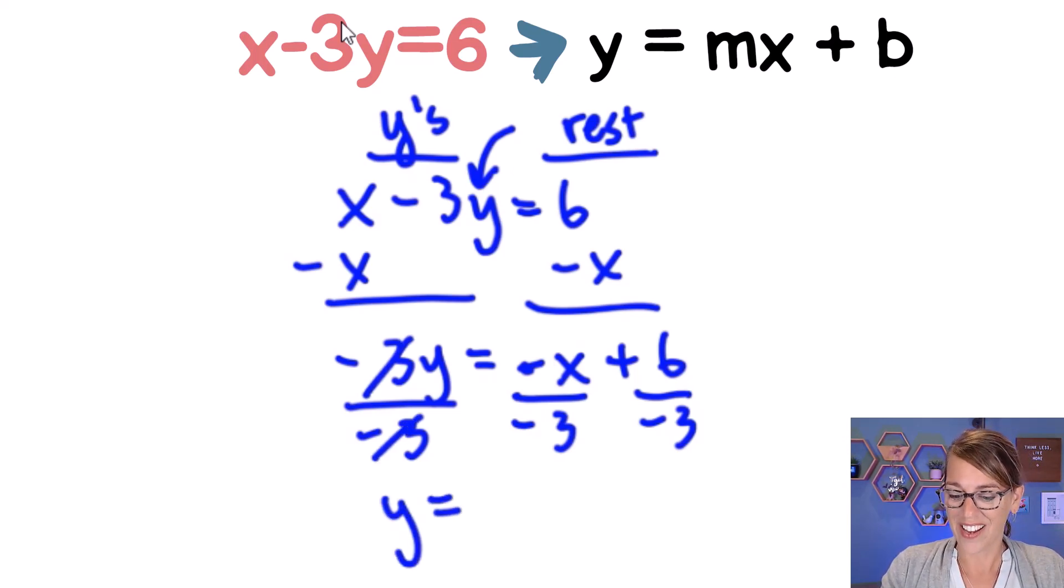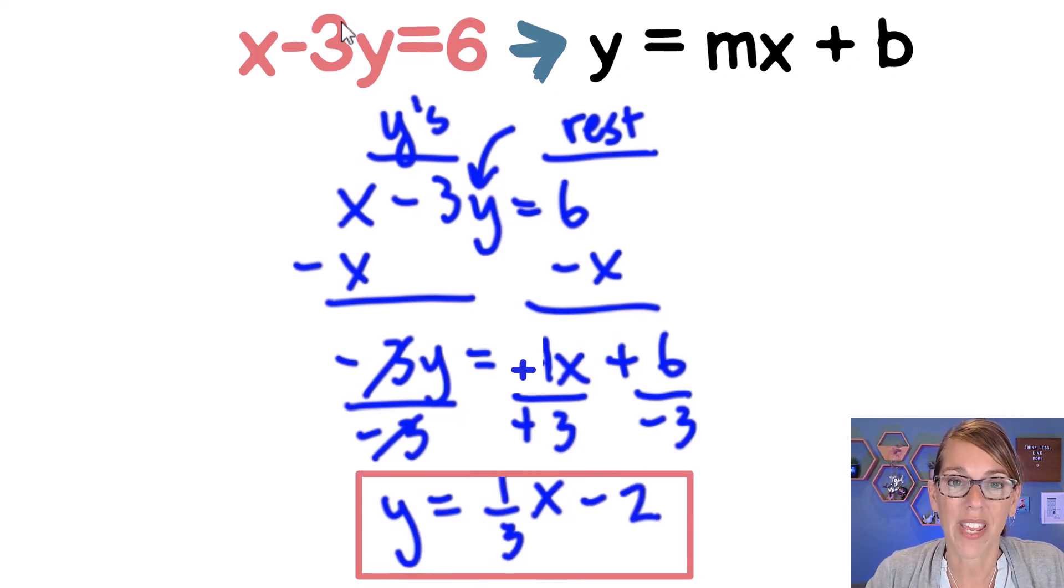On the other side I've got this negative x over negative 3. I want you to think about that negative 1 over negative 3. That's going to give me my coefficient. The two negatives become positive. So I get one-third and I'm just going to leave that in front of my x. And then 6 divided by negative 3 is negative 2. And there's my equation in slope intercept form.